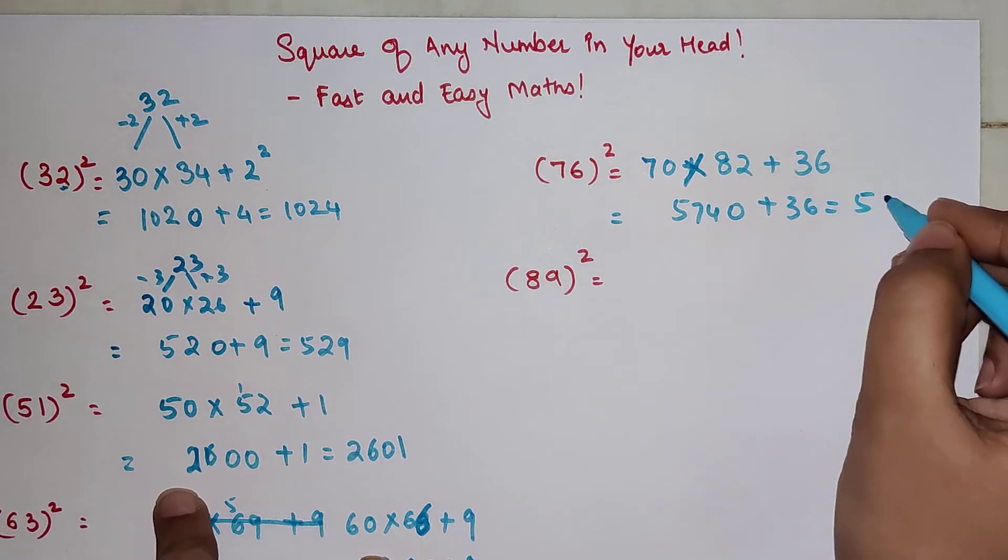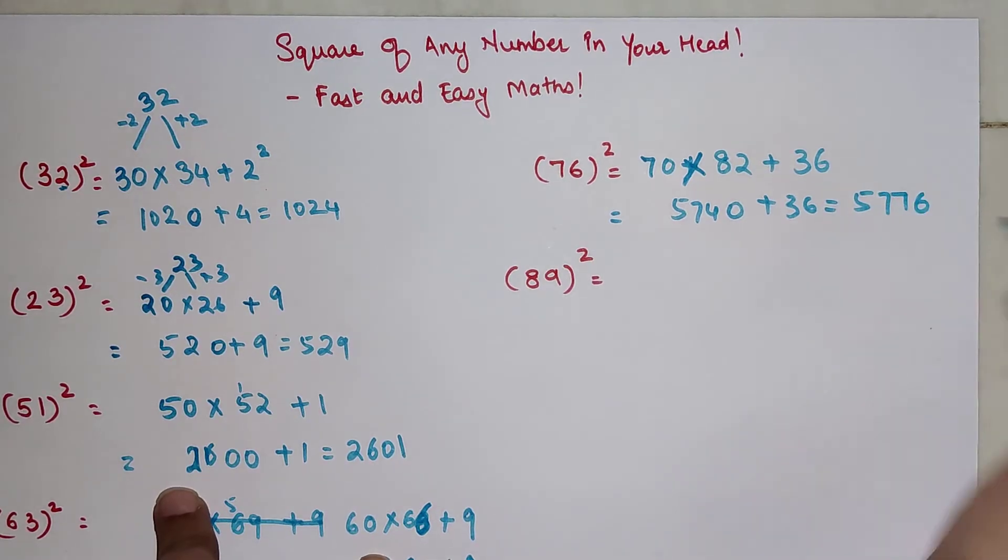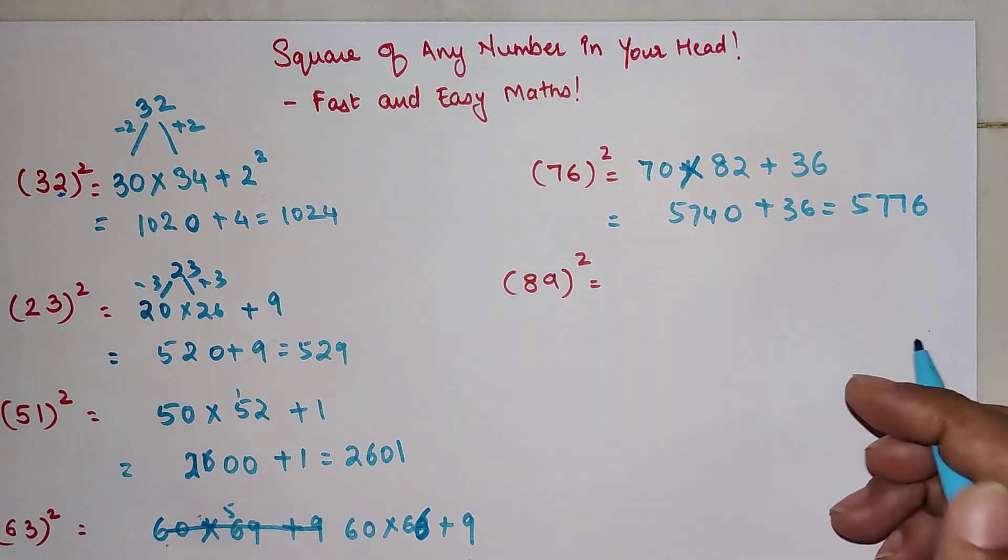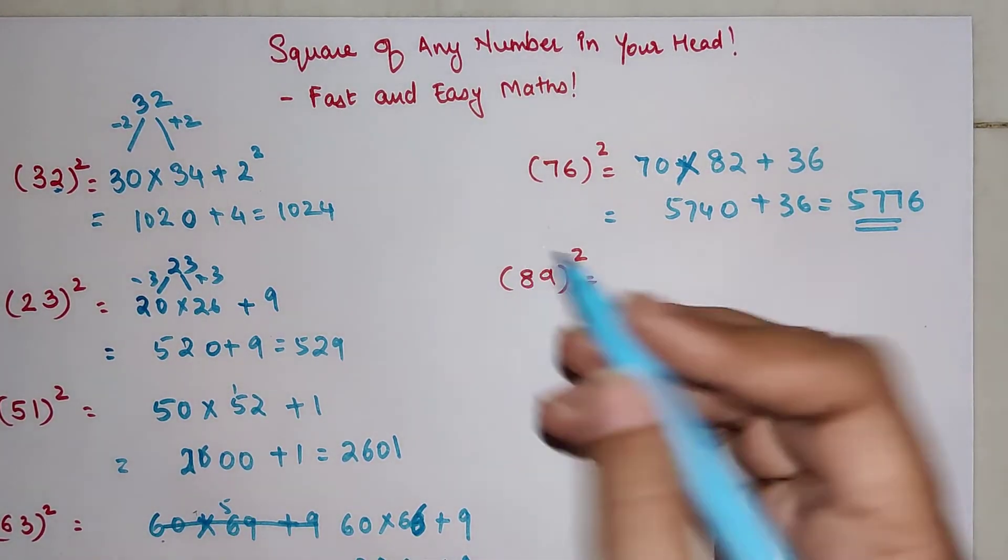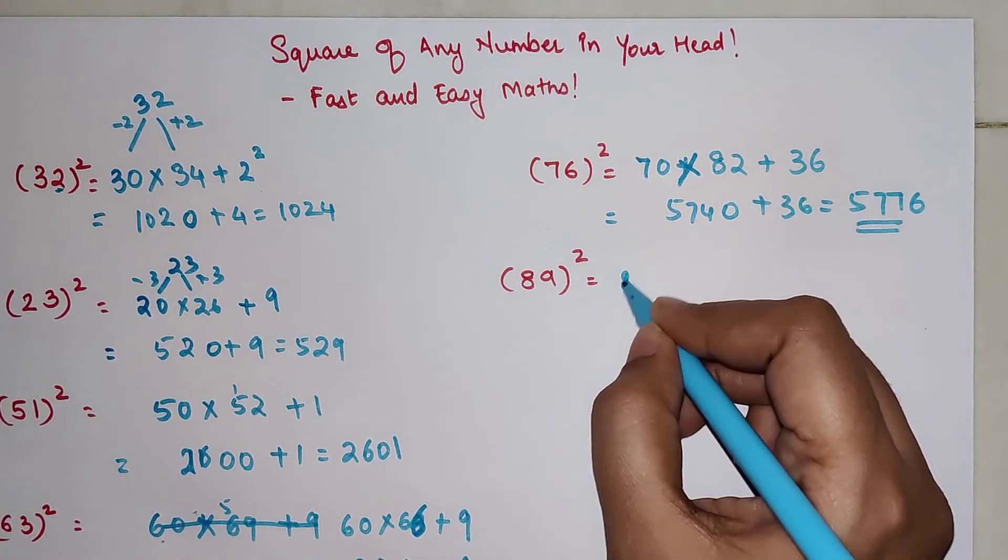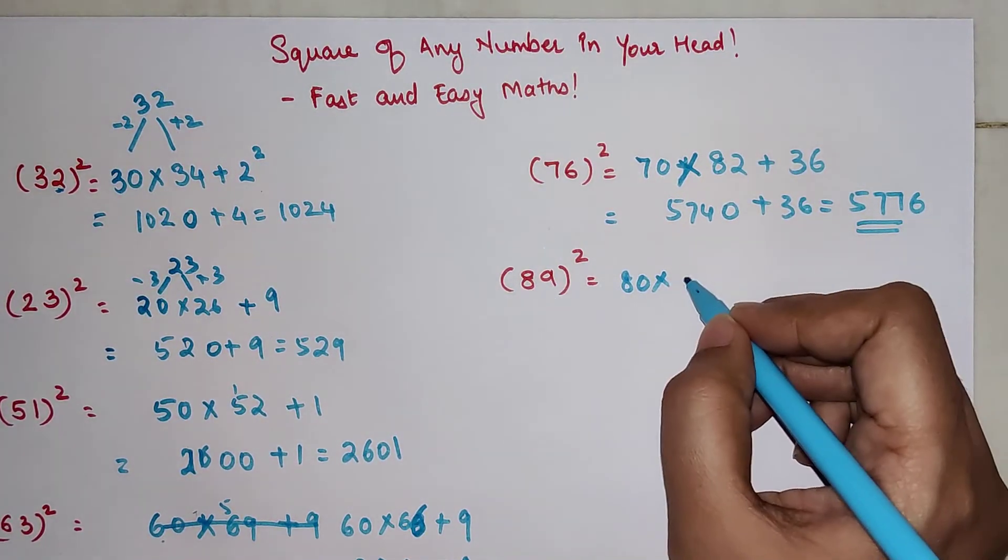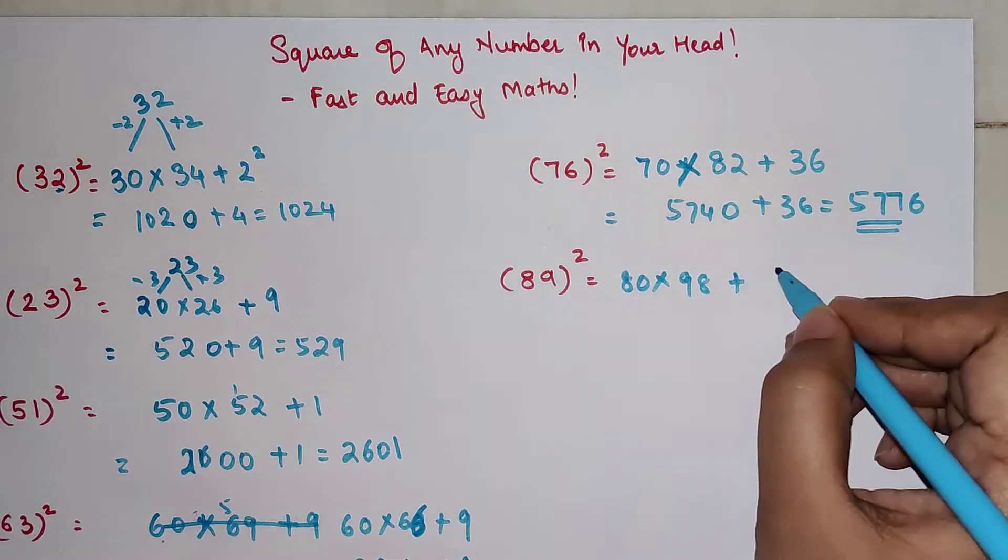Now for 89 square, this is 80 into 89 plus 9 gets you 98, plus 9 square that is 81.